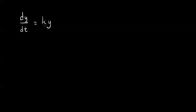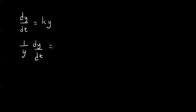In this video, we are going to attempt to solve this differential equation using separation of variables. Let's start by dividing both sides by y. We are going to get 1 over y times dy/dt is equal to k. Now we are going to treat dy/dt like a fraction and multiply by dt.